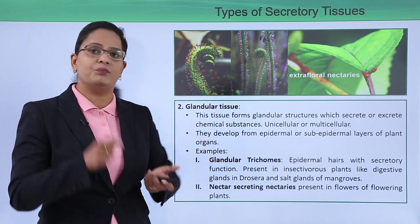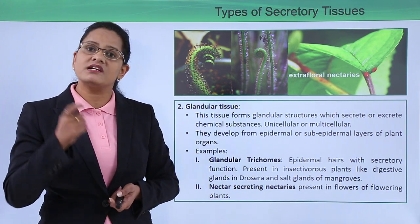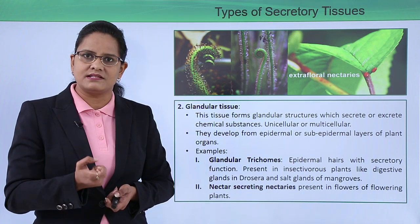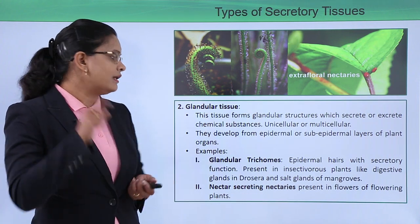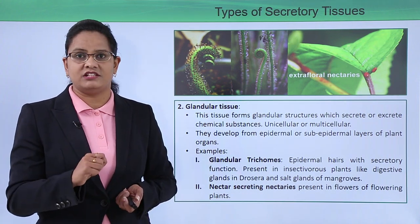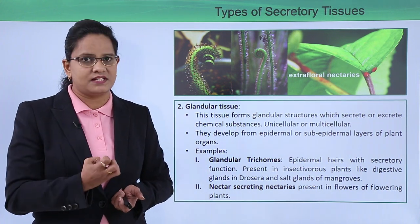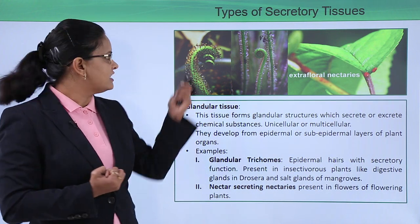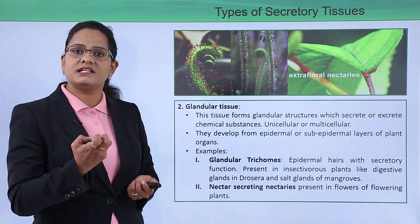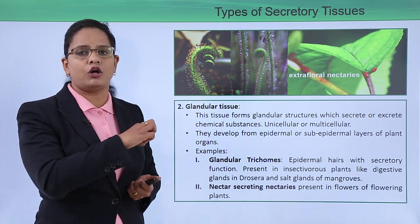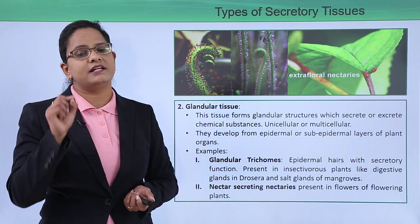Glandular tissues are further divided into three categories. The first is glandular trichomes — trichome means hair. These are epidermal hairs that secrete sticky substances. They are present generally in insectivorous plants. For example, the Drosera plant has sticky substance releasing from its epidermal hairs, which enables insects to stick to the plant and be engulfed by it.